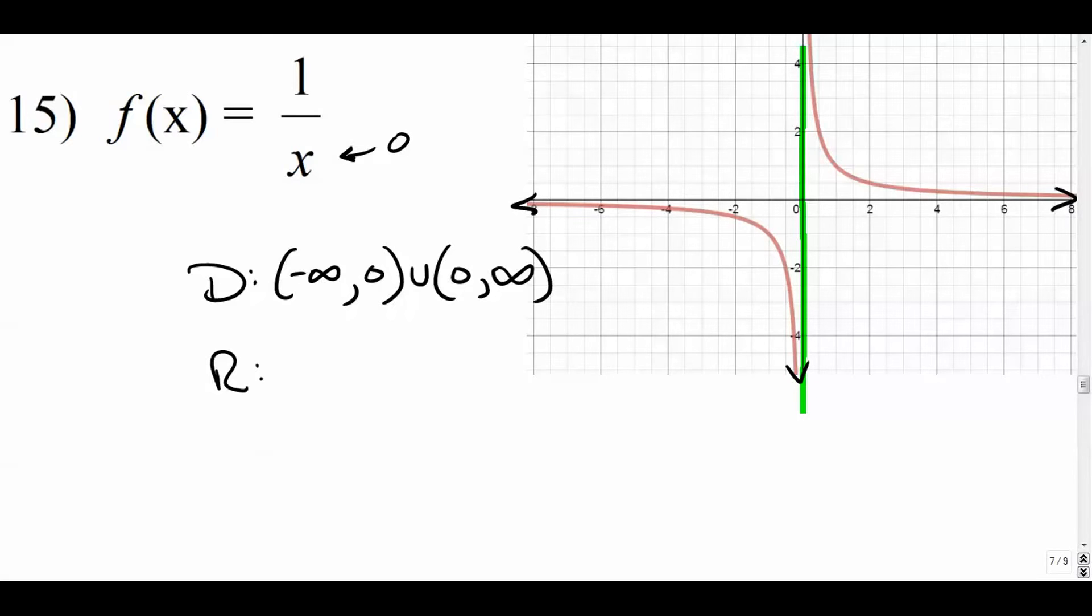And the range, let me get this green thing out of there. The range from bottom to top, we're scanning. We can see that it goes negative infinity. Can't be zero. Picks back up at zero and goes to positive infinity. There's a horizontal asymptote here because our output value will never be zero. So that's how we write that. If there's just one single value that is impossible, this is how we would write it in what we call interval notation.